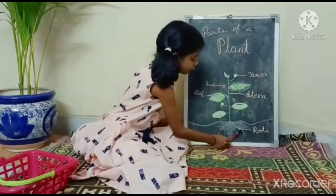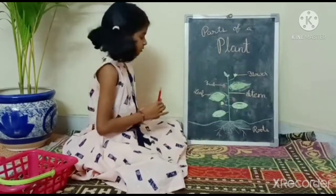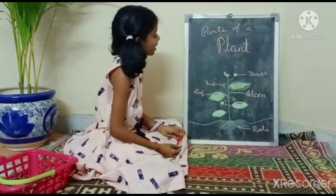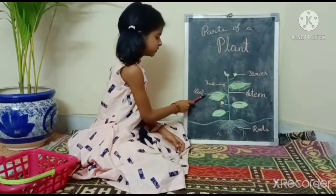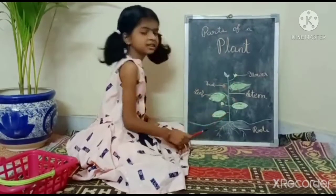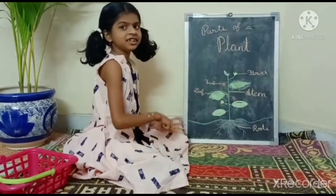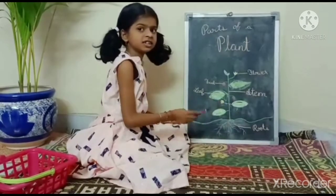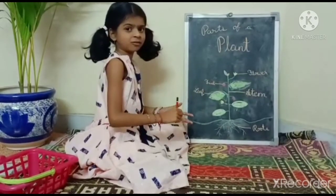This is the root system. The root system has only the roots. Next, the shoot system. The shoot system contains the leaves, roots, flowers, and the stem. The root system is under the ground, but the shoot system is above the ground.